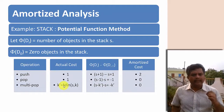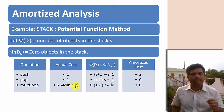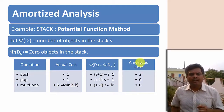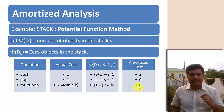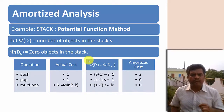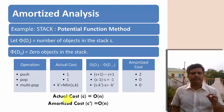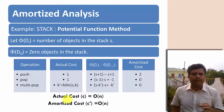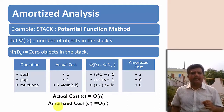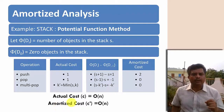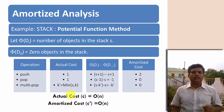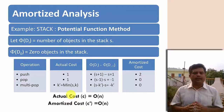For multi-pop, the actual cost is k' = min(s, k). The amortized cost becomes 0, but the potential change is −k'. To find the actual cost it takes O(n) time, and to find the amortized cost c' it also takes O(n) time.